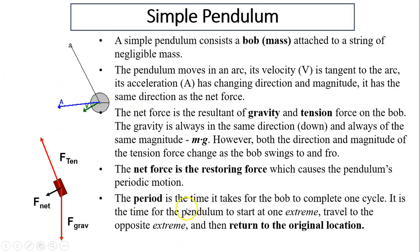The period is the time it takes the bob to complete one cycle. So in this case, it would be from this one extreme, go to the other extreme, then coming right back. That's the period.